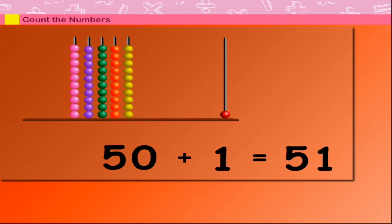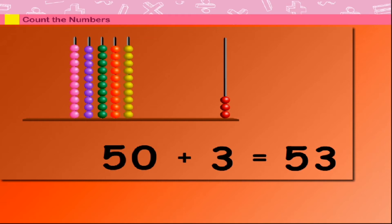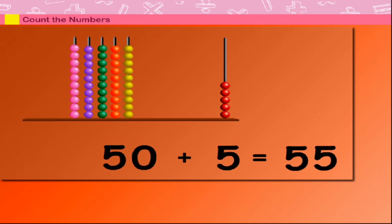50 plus 1 is equal to 51. 50 plus 2 is equal to 52. 50 plus 3 is equal to 53. 50 plus 4 is equal to 54. 50 plus 5 is equal to 55.